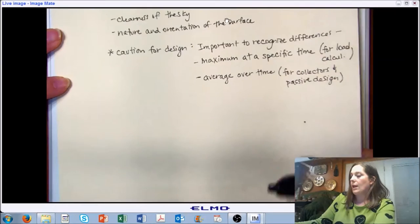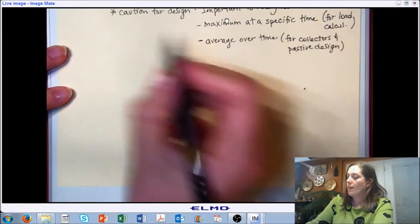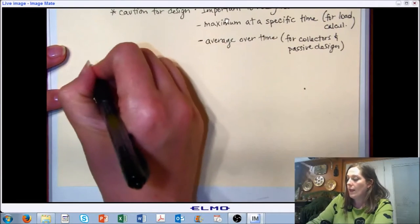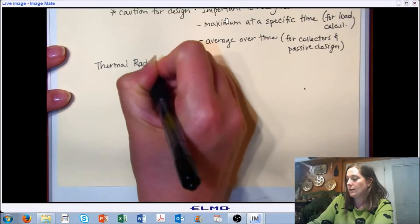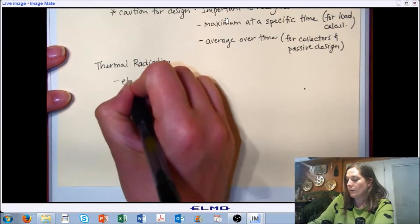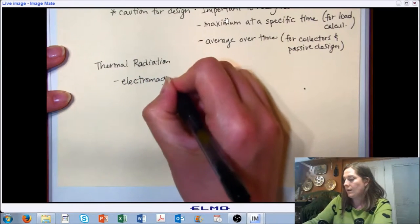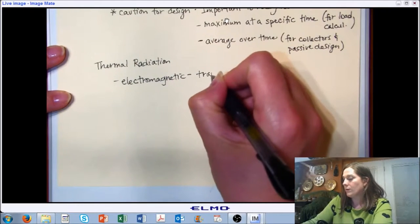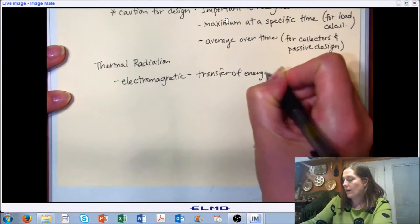Let's step back for a minute and think about radiation. We covered radiation in our heat transfer chapter, and now we're going to hone in on radiation that's specific to solar and also thermal. Radiation is electromagnetic and if we think in terms of our heat transfer, it's the transfer of energy by electromagnetic waves.